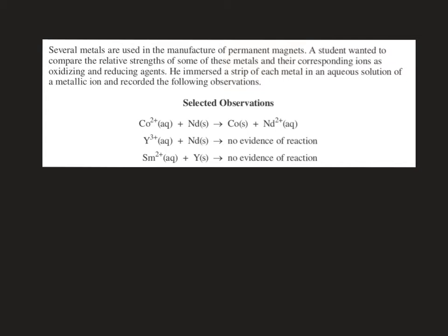So I'm going to quickly go through and just highlight all of the reducing agents in red. As a reminder, the reducing agents are typically the less positively charged version of a species. In the first reaction we have neodymium and neodymium 2 plus, so neodymium is our reducing agent. In our second reaction neodymium solid is also our reducing agent, and in our third reaction yttrium solid is our reducing agent.